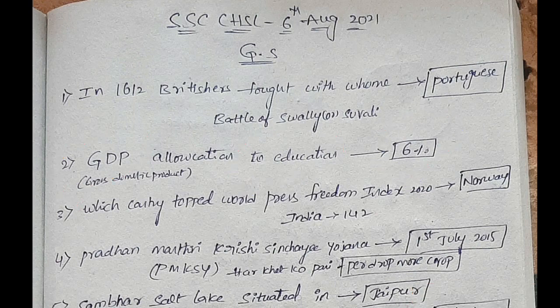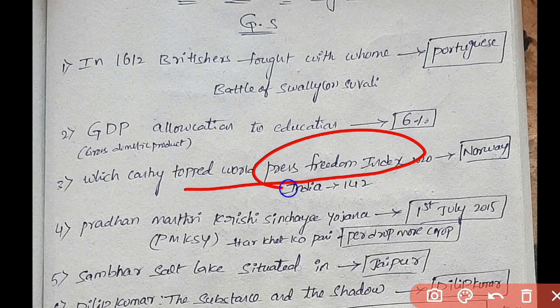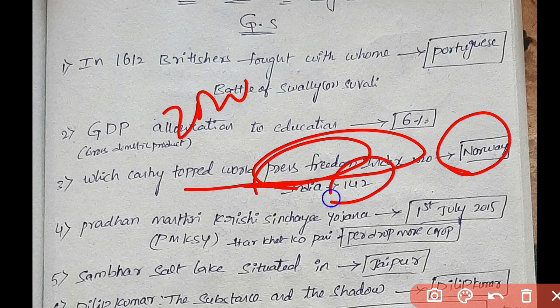Next question: Which country topped the World Press Freedom Index? This is very very important. Press Freedom Index 2020 — top is Norway, and India's rank is 142.